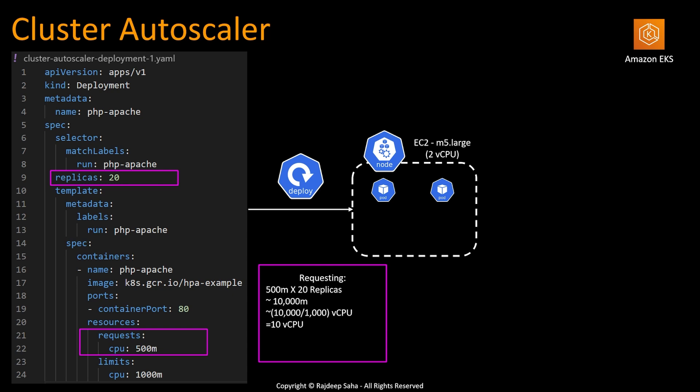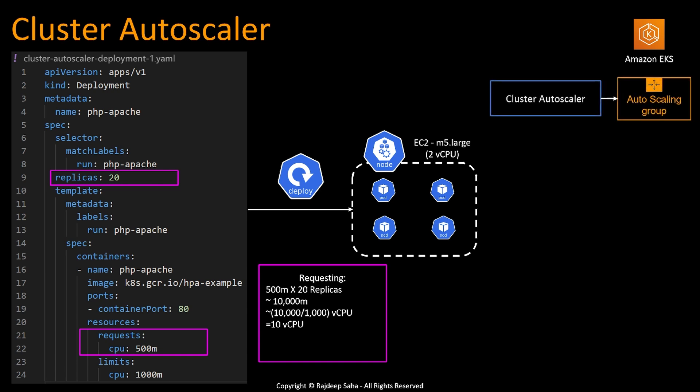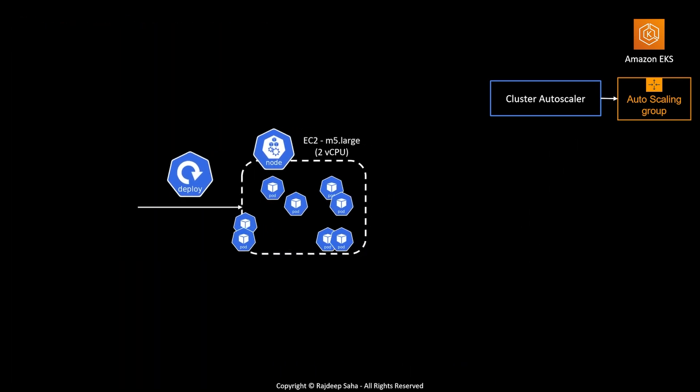We need 20 replicas of those pods. So we need 500 millicore multiplied by 20 replicas, which equals 10,000 millicore of CPU. One vCPU is 1,000 millicore, so we need 10 total vCPUs. The Kubernetes scheduler will schedule two more pods in the running EC2 worker node, and at this point cluster autoscaler along with the traditional autoscaling group will kick in and start provisioning new m5.large nodes.